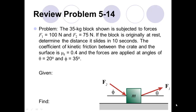This example is from the text Conceptual Dynamics, specifically review problem 5-14. The problem statement reads: the 35 kilogram block shown is subjected to forces F1 equals 100 newtons and F2 equals 75 newtons. If the block is originally at rest, determine the distance it slides in 10 seconds. The coefficient of kinetic friction between the crate and the surface is 0.4, and the forces are applied at angles theta equals 20 degrees and phi equals 35 degrees.